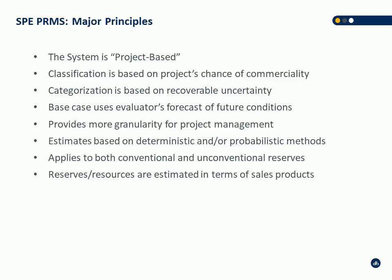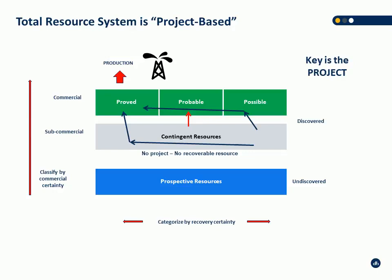This is another look at the McKelvey box. You've got your categories left to right — proved, probable, possible; low, best, high — and prospective and contingent resources. The arrows indicate that the whole purpose of evaluations, the whole purpose of shifting reserves and resource categories, is to try and move up and to the left of the chart — to increase certainty. Most stakeholders are focused on the top left quadrant of that chart.